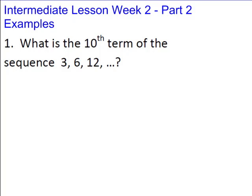In this video we're looking at examples using the formulas from the lesson. The problem asks: what is the tenth term of the sequence 3, 6, 12? We always want to determine if it's arithmetic or geometric. It's not arithmetic because the differences aren't the same. Looking at ratios: 6/3 = 2 and 12/6 = 2, so the common ratio is 2 and this is a geometric sequence.